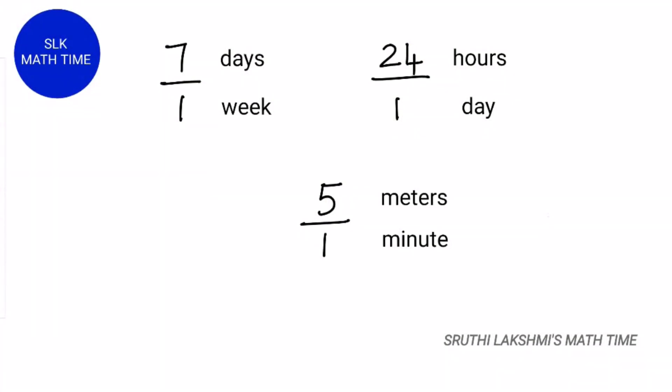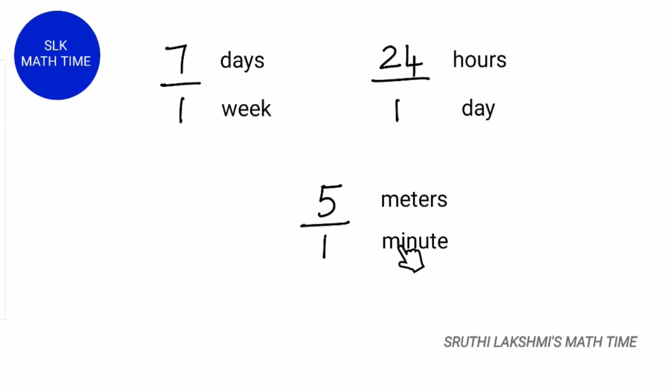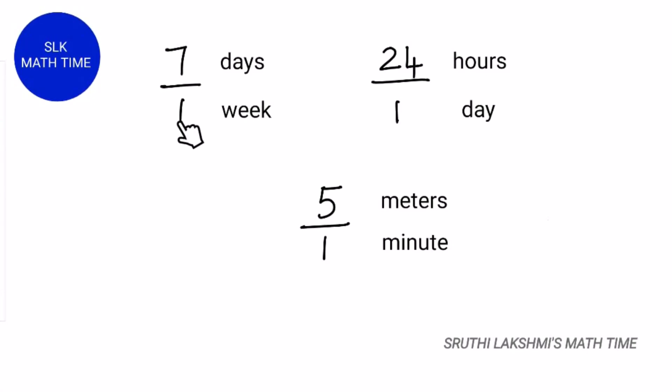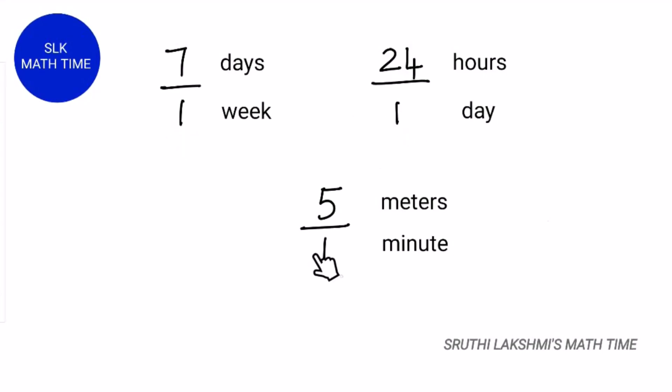Let's see some unit rate examples: 7 days per week, 24 hours per day, 5 meters per minute. But you might be wondering why are the bottom numbers of all these rates 1? As you see here, in these examples, the denominators are 1.